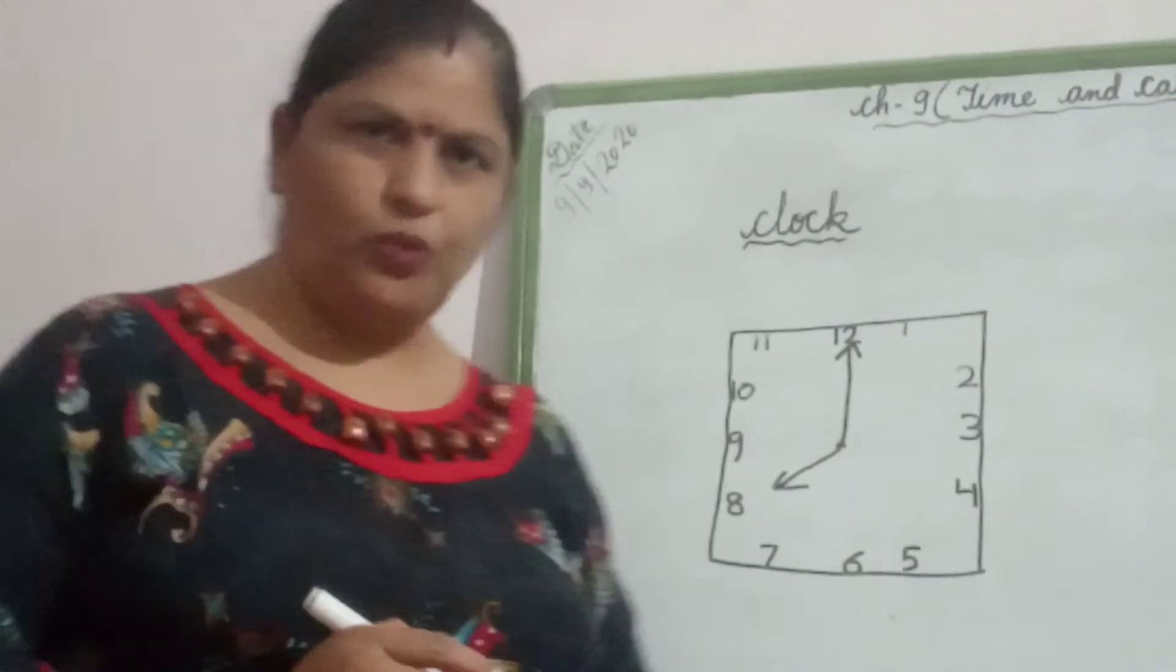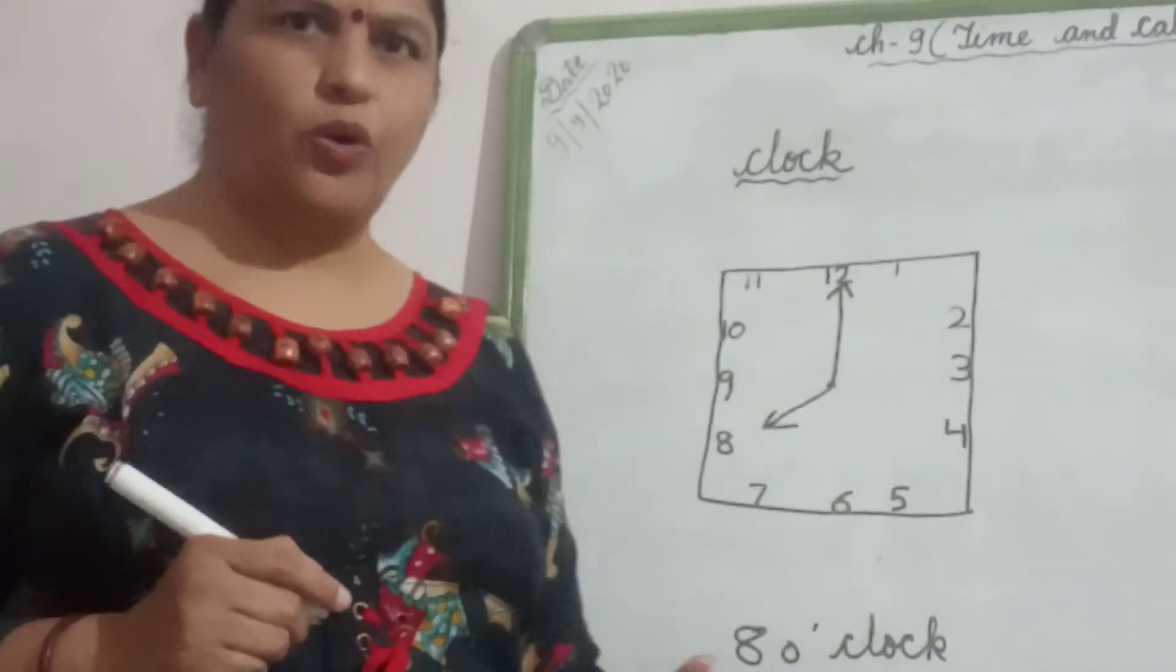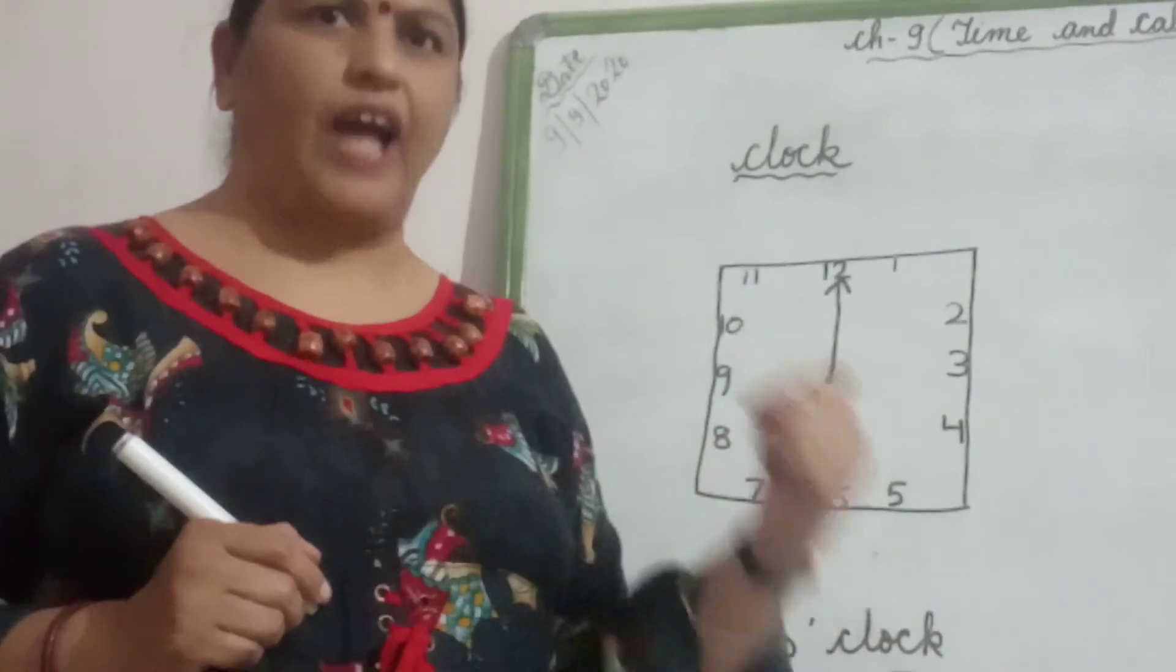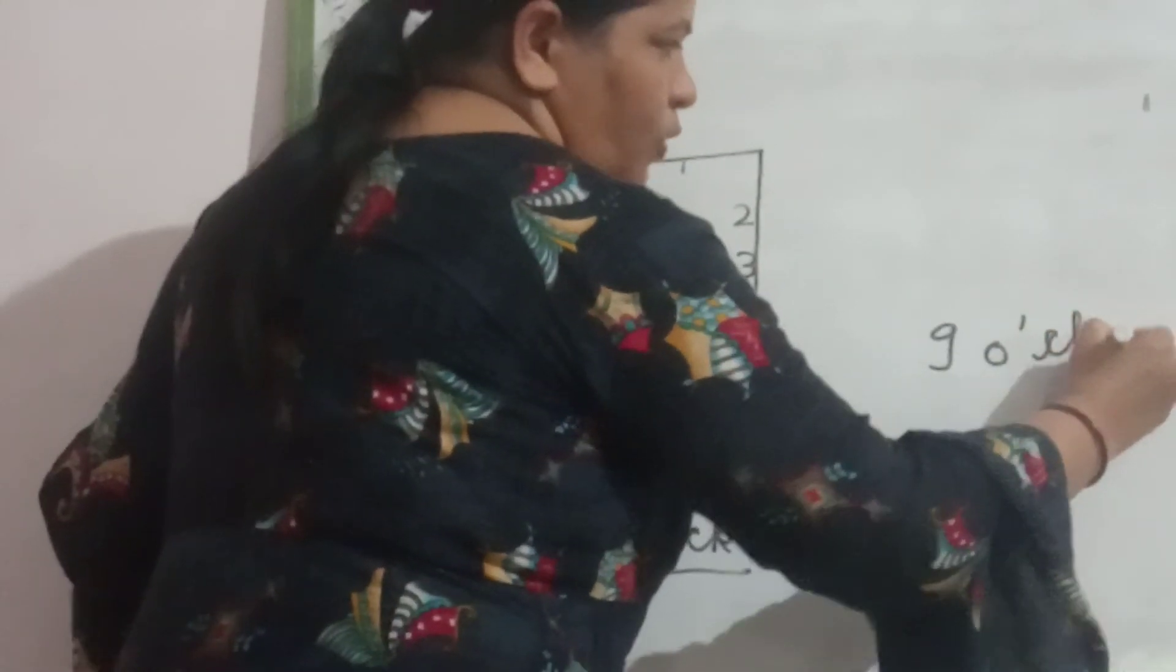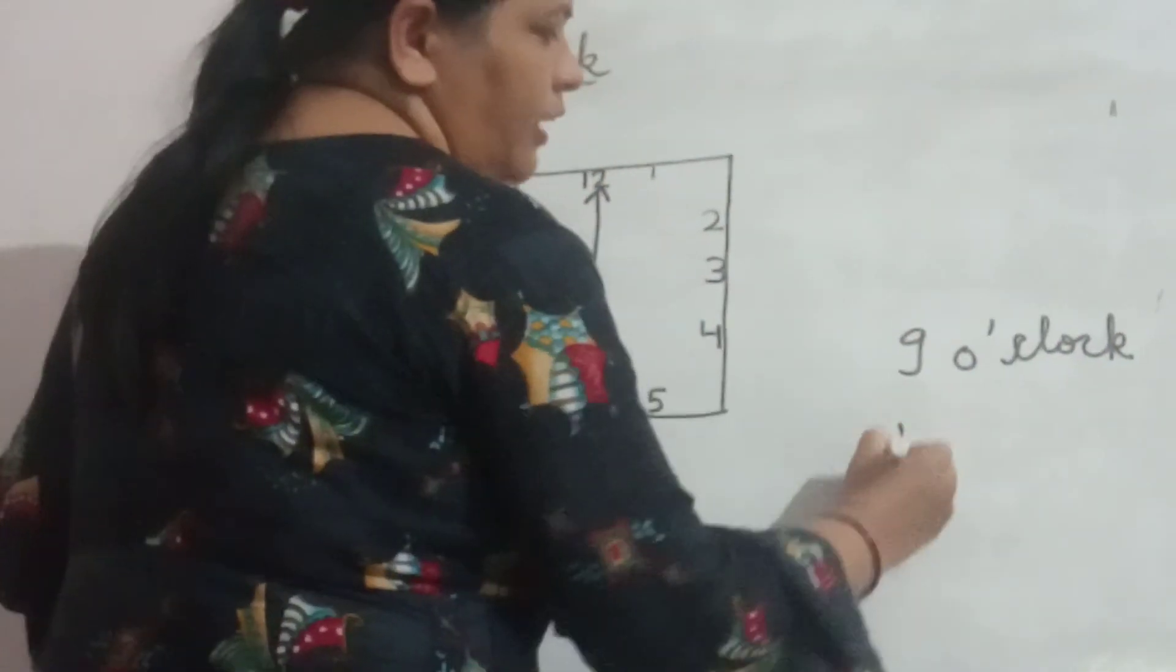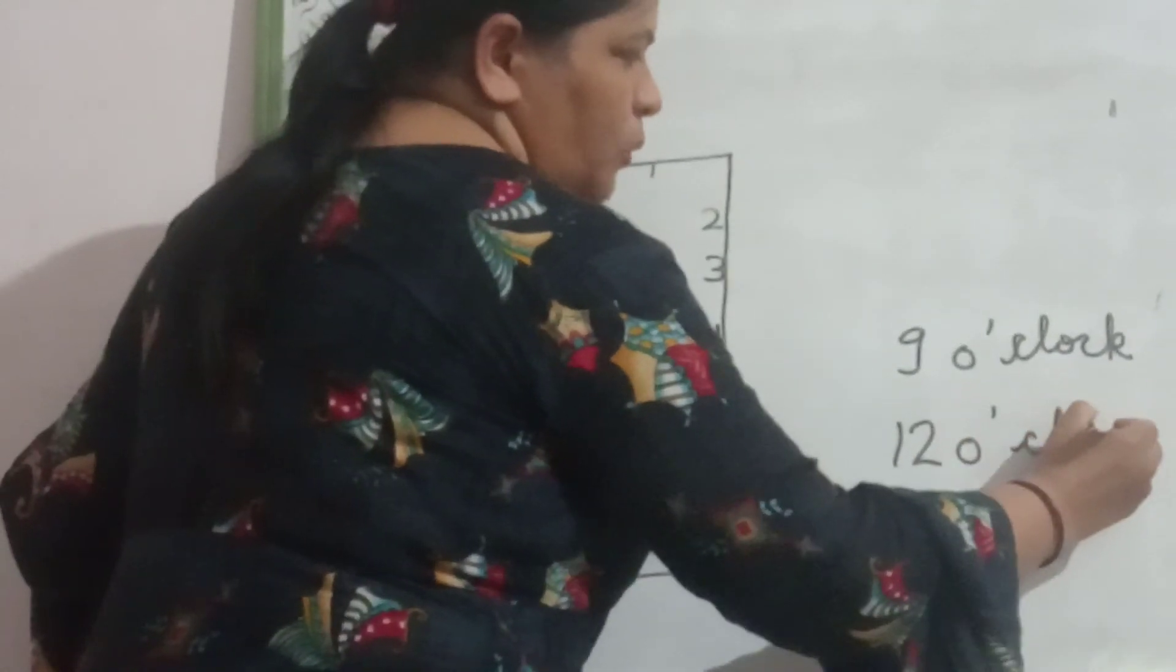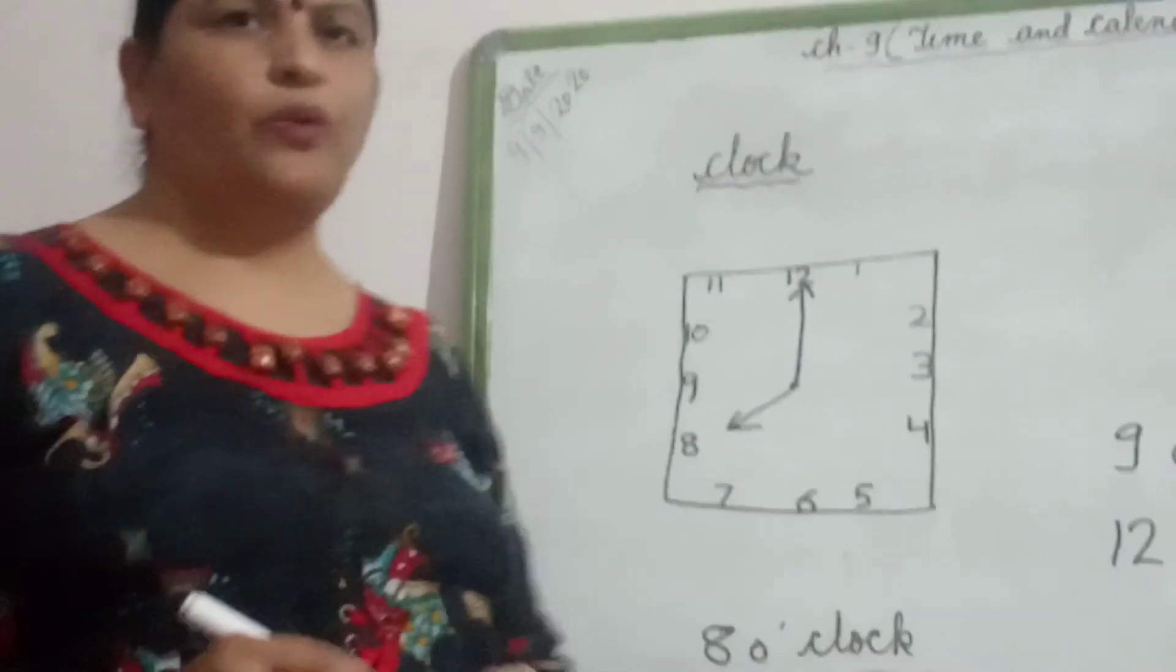Now children, what you have to do, whatever notes I have written, you have to write down in your maths notebook. Plus, you have to make two clocks. One is of 9 o'clock and other is of 12 o'clock. See, I am writing down here. One clock you have to make in which 9 o'clock has been shown and the other clock you have to make in which the time will be 12 o'clock. I hope it is clear to you. Thank you and have a nice day.